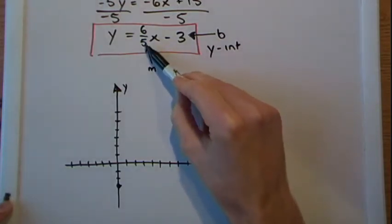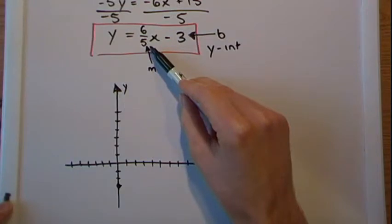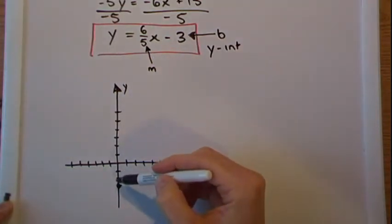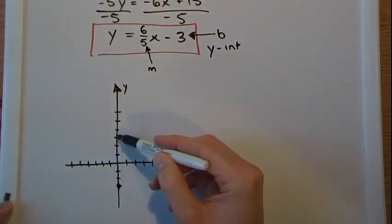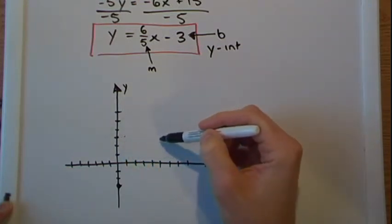And then we know that the slope is going to be 6 over 5, which means rise of 6 and a run of 5. So for every rise of 6, 1, 2, 3, 4, 5, 6, there's going to be a run of 5: 1, 2, 3, 4, 5.